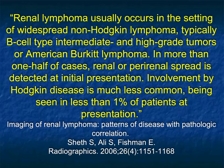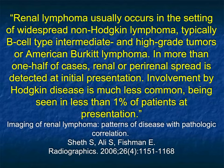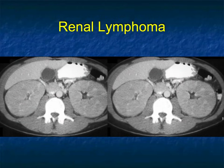An article I wrote nearly 20 years ago with Sheila Sheff discussed the appearance of lymphoma — often B-cell or other types of non-Hodgkin's lymphoma. In more than half of cases, renal or perirenal spread is present at presentation. Involvement by Hodgkin's disease is less common, being seen in less than 1% at presentation.